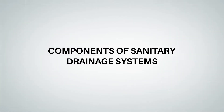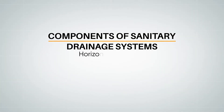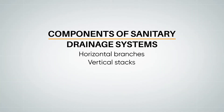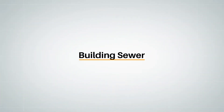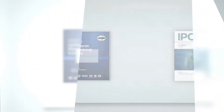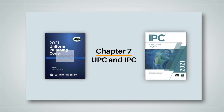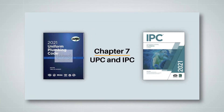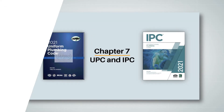Typical components of a sanitary drainage system include horizontal branches, vertical stacks, cleanouts, and a building drain inside the building. They will also include a building sewer from the outlet of the building drain to the point of disposal. All these components are covered in Chapter 7 in both the UPC and IPC.